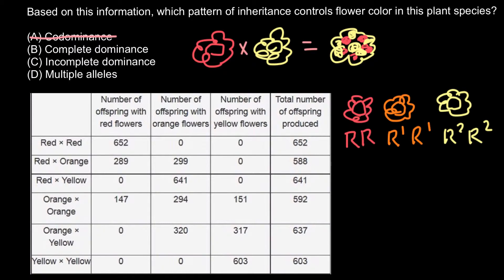For example, red color would be completely dominant over orange, and orange would be completely dominant over yellow. Yellow would be recessive to both orange and red, and red would be dominant over both orange and yellow. This would be the multiple alleles theory combined with complete dominance.